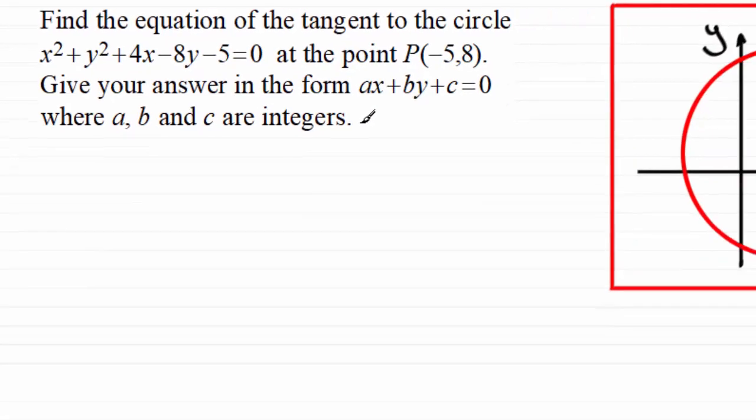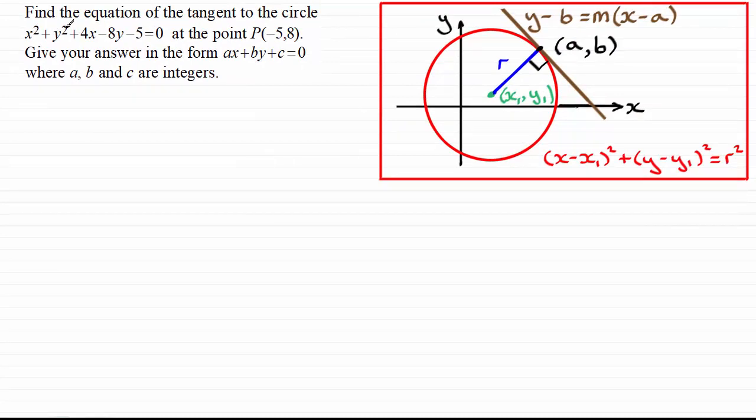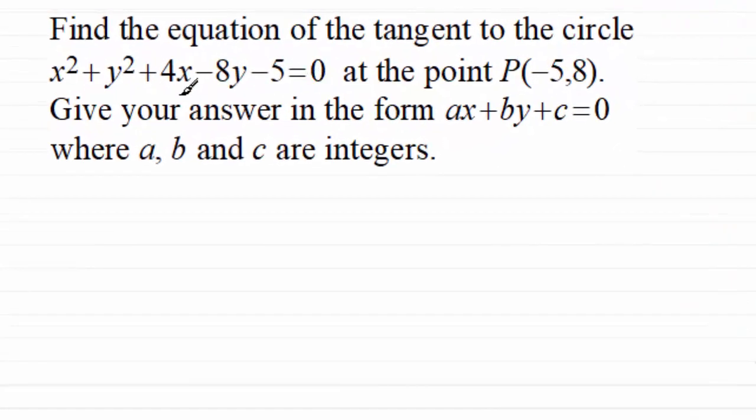Now, the first thing we need to do is convert this form of the equation of a circle into this form here where we can establish the coordinates of the centre of the circle and the radius. Now, I'm assuming that you watched a previous video in this series where I showed you how to convert this into this form. We did it by completing the square. So you might want to pause the video at this stage and just have a go at finding that centre and radius of this circle. Otherwise, I'll just give you the solution in a few moments.